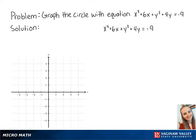For this problem, we want to graph the circle with the equation x squared plus 6x plus y squared plus 4y equals negative 9.